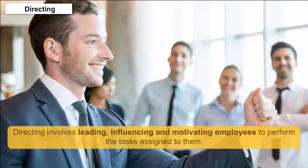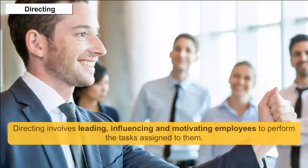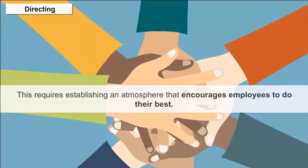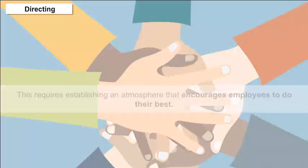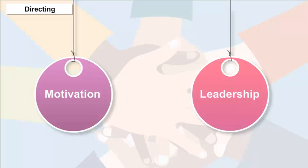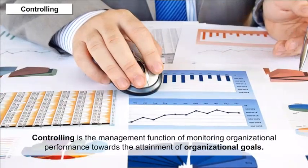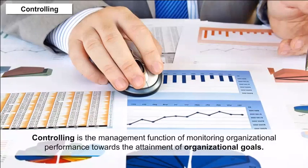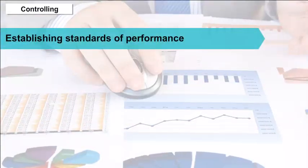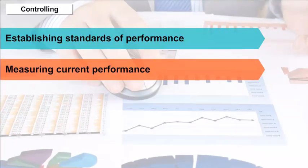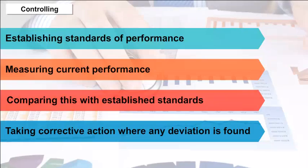Directing: Directing involves leading, influencing and motivating employees to perform the tasks assigned to them. This requires establishing an atmosphere that encourages employees to do their best. Motivation and leadership are two key components of direction. Controlling: Controlling is the management function of monitoring organizational performance towards the attainment of organizational goals. It involves establishing standards of performance, measuring current performance, comparing this with established standards and taking corrective action where any deviation is found.